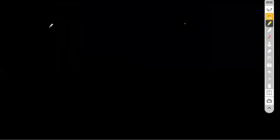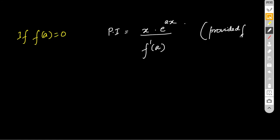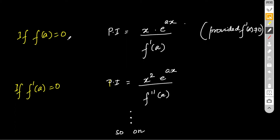If f(a) = 0, the formula modifies to PI = x·e^(ax)/f'(a), provided f'(a) ≠ 0. If f'(a) = 0 as well, then PI = x²·e^(ax)/f''(a), provided f''(a) ≠ 0. This pattern continues until a non-zero derivative value is found.